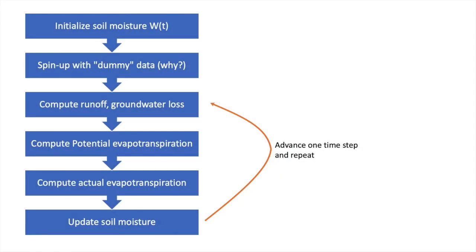Operationally, the way that you would run one of these models, this leaky bucket approach is simple enough that if you're comfortable in Python or R or MATLAB, you could easily code one up in a day or two just on your desktop, your laptop. And so if you're going to do this, you typically initialize soil moisture with some mean value, and then you have to spin it up.